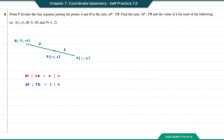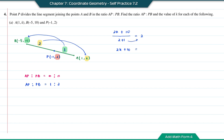Now that we know the ratio is 1 to 2, we can find the value of K, where K is the y-coordinate of point A. Using the y-coordinate: 2 times K plus 1 times 10, divided by 2 plus 1, equals the y-coordinate of point P which is 2. So 2K plus 10 equals 2 times 3, which is 6. Then 2K equals 6 minus 10, which is negative 4. Therefore K equals negative 4 divided by 2, so K is equal to negative 2.